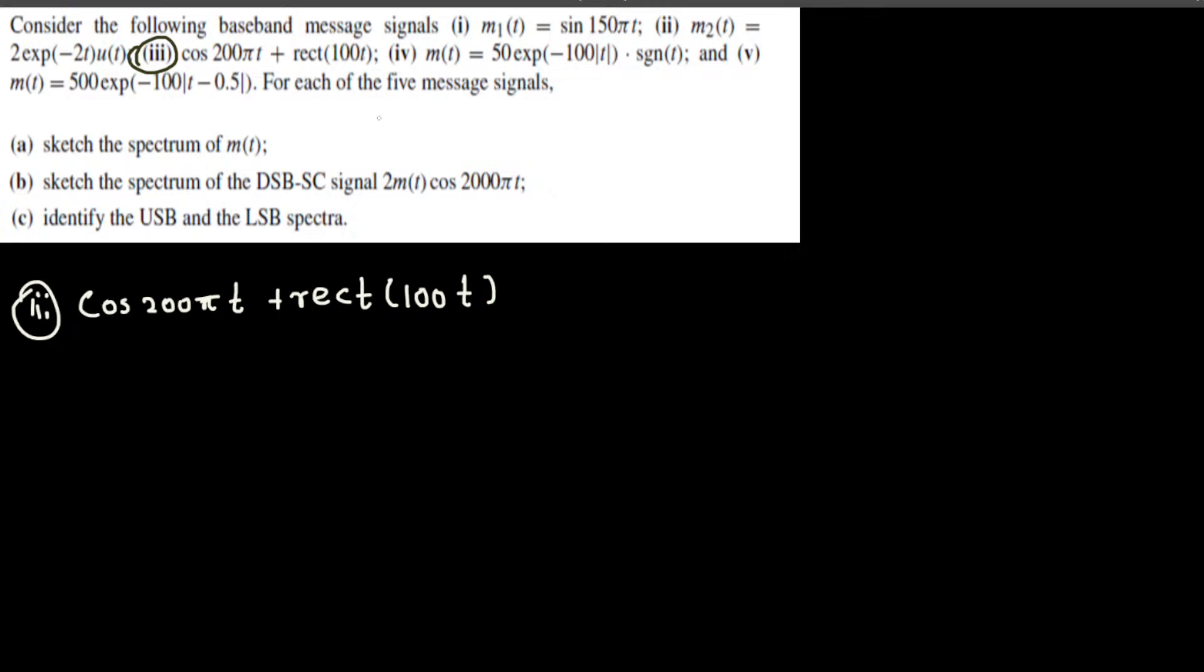First thing is sketch the spectrum of m. In order to do this, we have to convert this one into frequency domain. So we're going to do the Fourier transform of this one. This is going to be m3 of omega. This one is m3 of t, and m3 of omega is going to be the Fourier transform of this one. There are some properties you can use to do the Fourier transform. If you do the Fourier transform for cos 200πt, you will get...